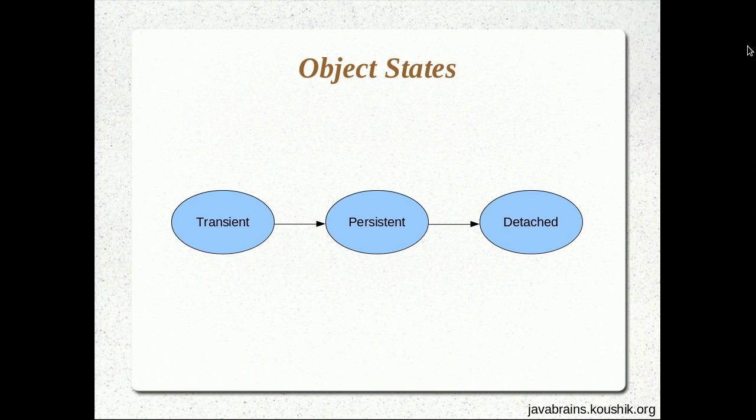We learned about three object states in our previous tutorial: what is a transient object, what is a persistent object, and what is a detached object. All of this has to do with how the object is being treated by Hibernate. When Hibernate is not tracking a particular object, it's just transient.